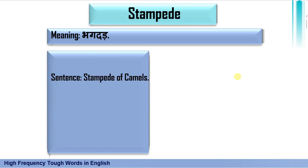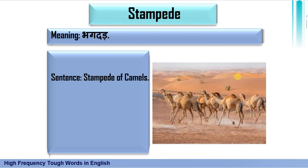Then 'stampede,' which means bhagadar. It is a very common word, generally used in newspapers — stampede of people or stampede of camels. So stampede means bhagadar.